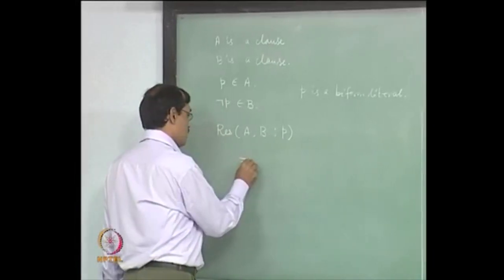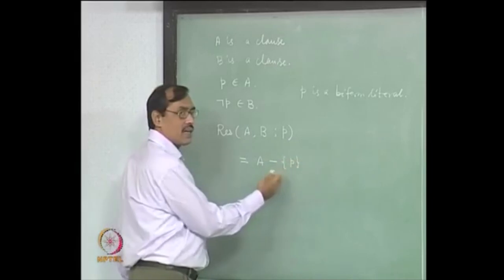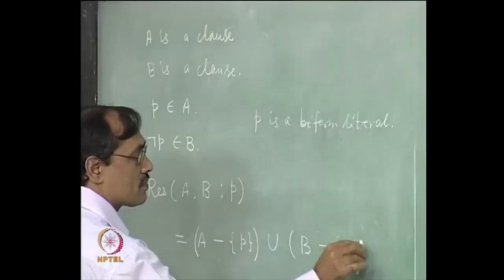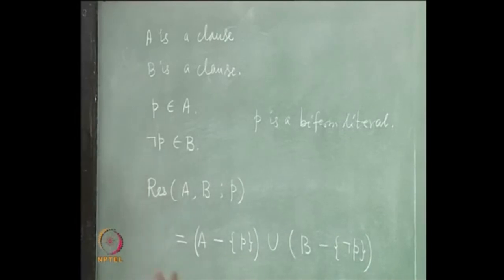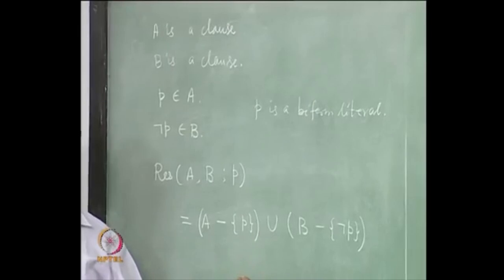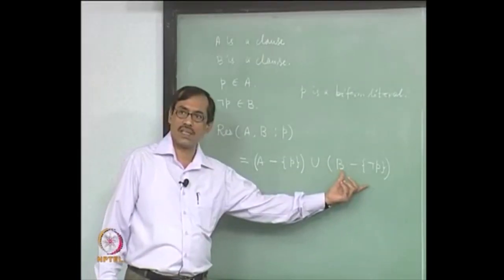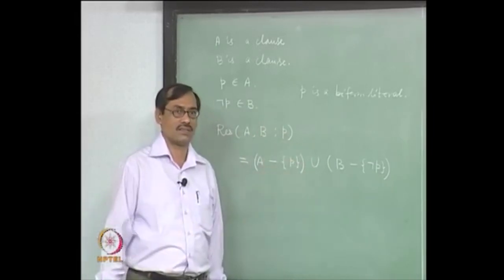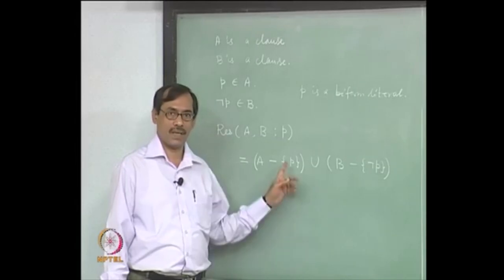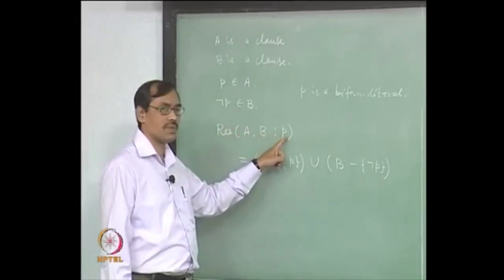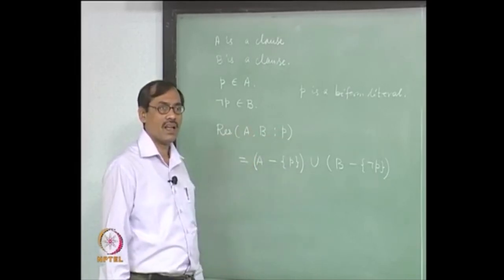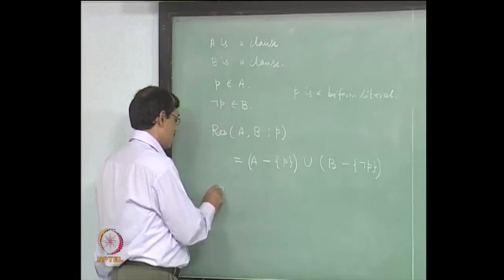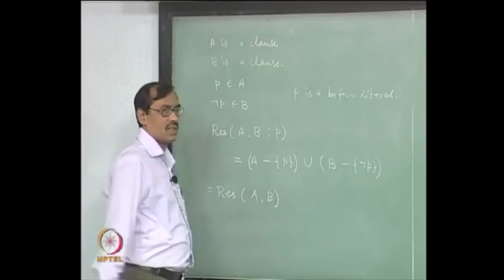We define the resolution of A and B as: take A minus p — remove p from A — then similarly take B minus not-p — remove not-p from B — and then take their union. The union means you get a new clause where some literals from A and the literals from B are there; it is the OR of all those things. It is equivalent to deleting p, deleting not-p, and then OR-ing them together. This will be called the resolution of A and B with respect to the biform literal p. Sometimes we omit the biform literal — if it is clear what p is, we just write resolution of A, B as an informal notation.